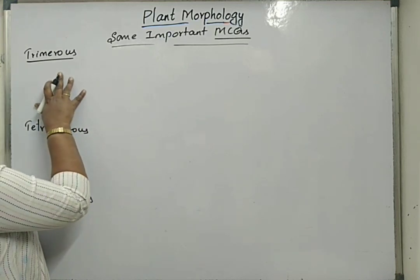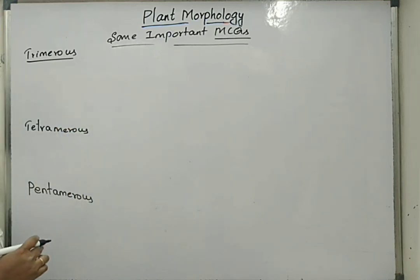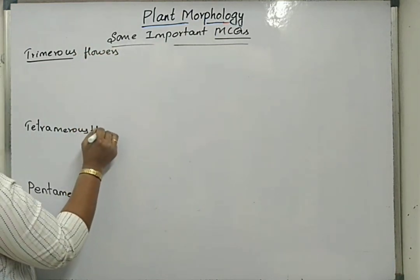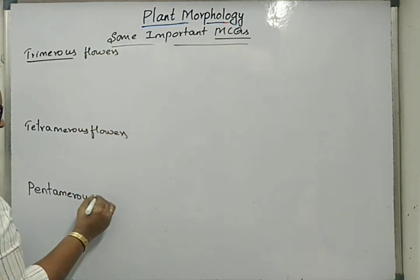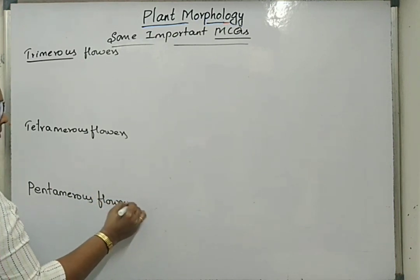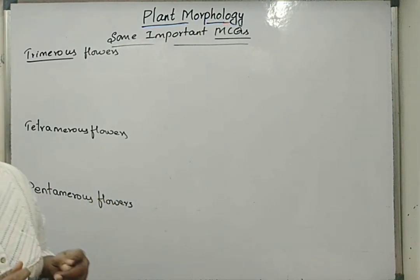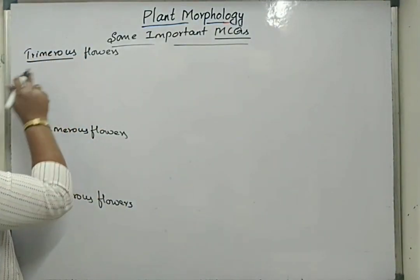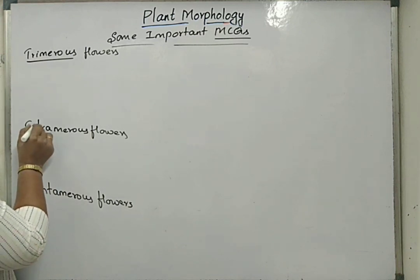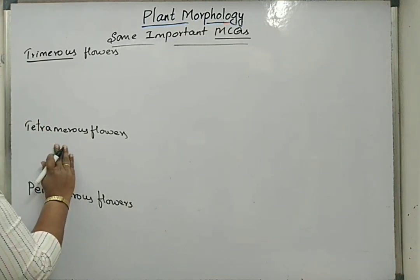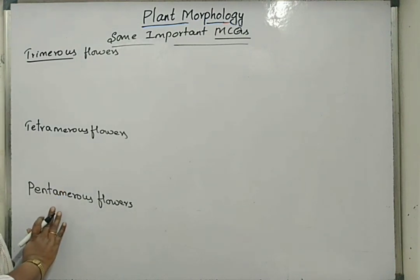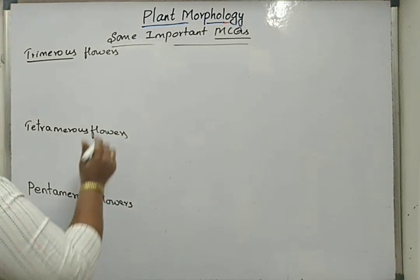Sometimes we have seen in previous year MCQs examples under trimerus types of flowers. So, examples under trimerus and the meanings of trimerus, tetramerus, and pentamerus: if petals are multiples of 3, such flowers are called trimerus; if multiples of 4, called tetramerus; if multiples of 5, called pentamerus flowers.